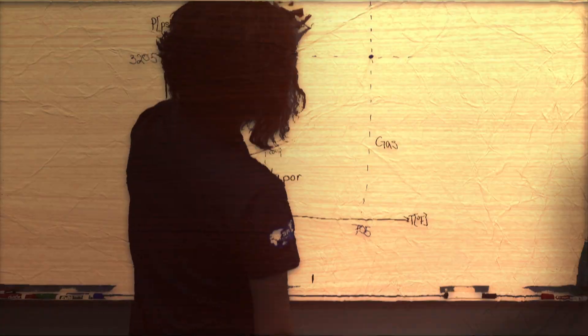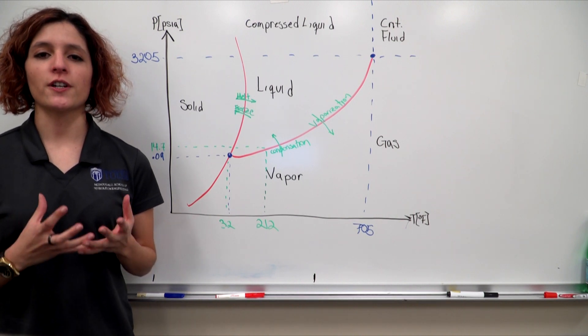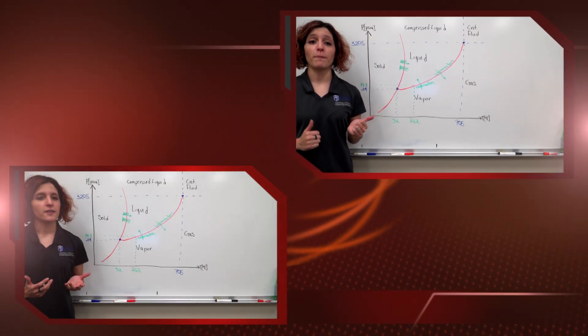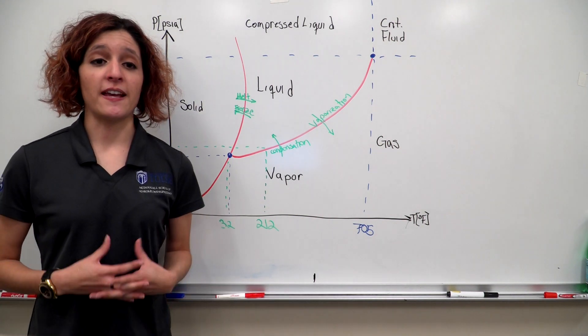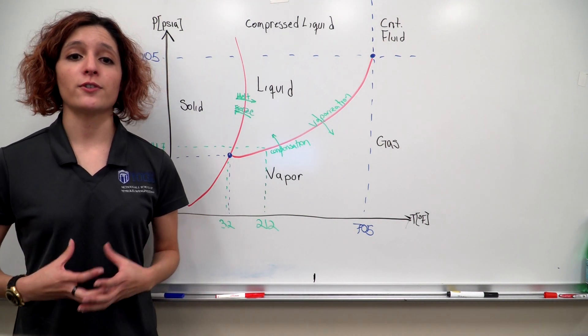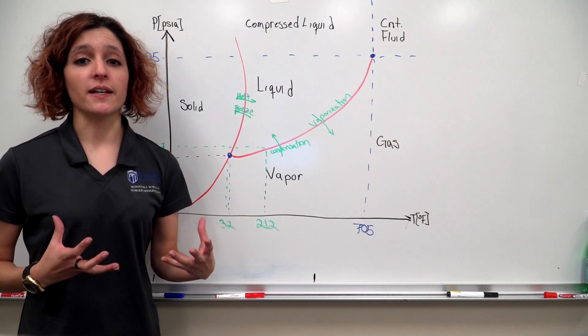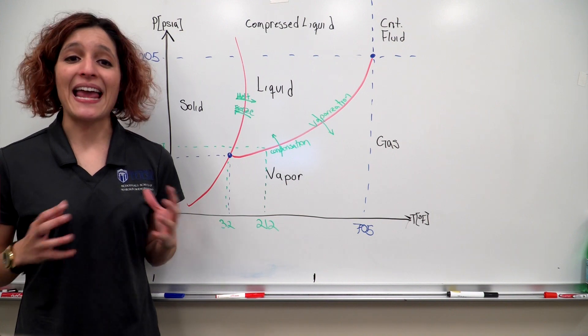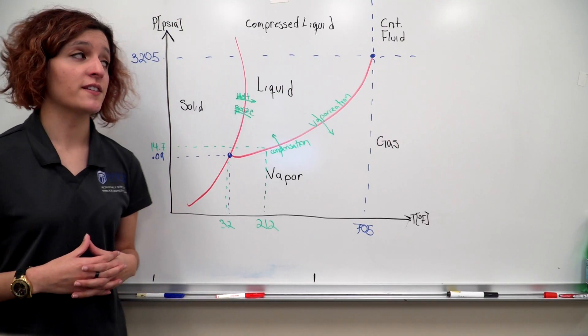An important concept of a component is its critical point, which occurs at a fluid's critical pressure and temperature. For the case of water this happens at 705 degrees. Above this critical temperature our vapor fluid becomes a gas, meaning our component cannot become a liquid at any pressure. Above a component's critical pressure, which for the case of water is at 3205 PSI, our fluid is considered a compressed liquid.